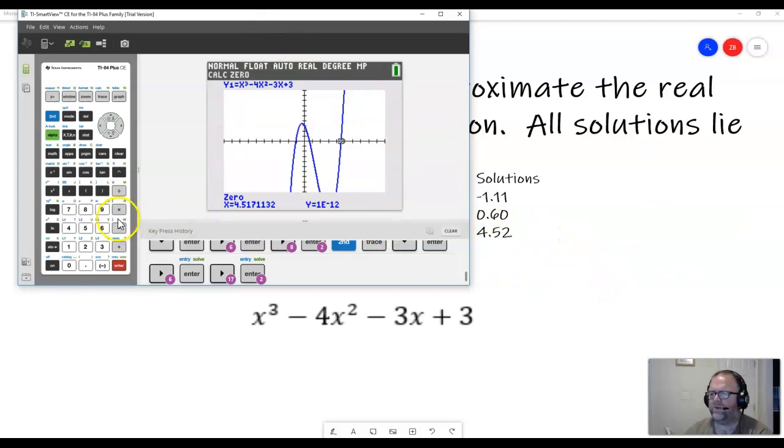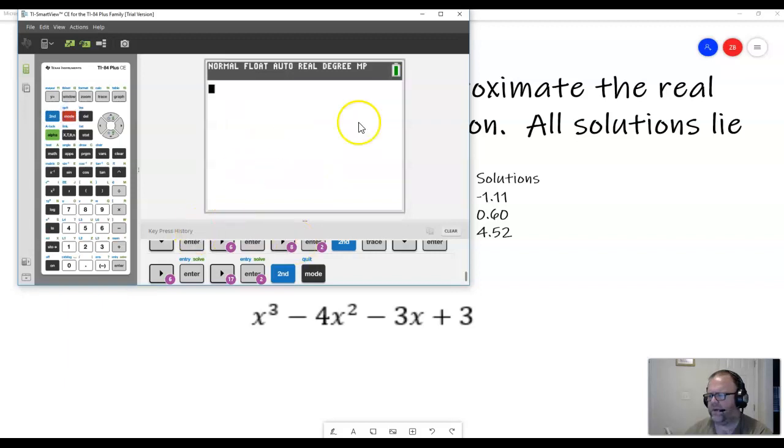But if I were to then go back here, and I do second quit, and remember I have this equation stored as my y1. What I can do is I can evaluate these three solutions. And because they're only approximations, because we had to reduce them, it's not going to quite give me a zero when I put them in the function, but it'll be pretty close.